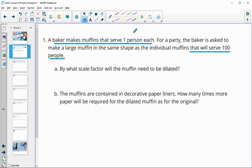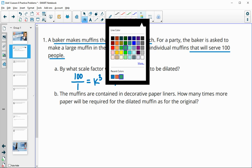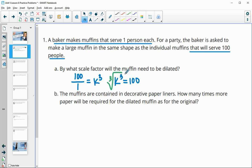They're giving us two volumes to compare. When we compare the dilated amount to the original amount, 100 people versus one, this is going to be our k cubed value. So k cubed equals 100, then we're going to need to do the cube root of that to come up with our actual scale factor. So k equals 4.6 when we cube root 100.